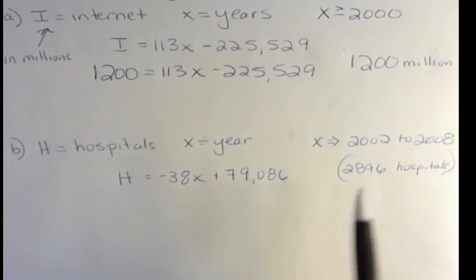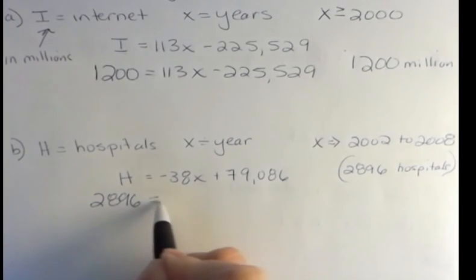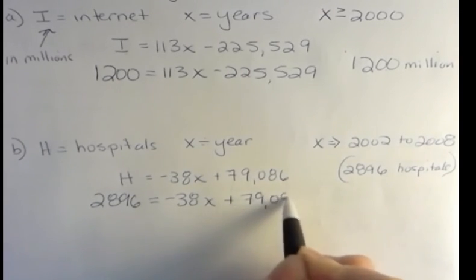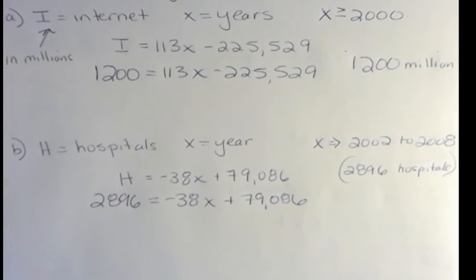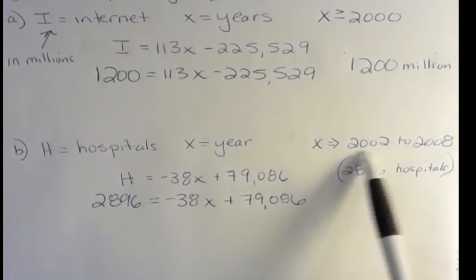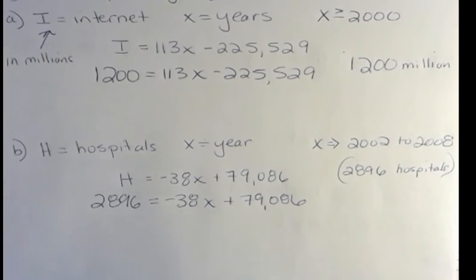And now I want to know, when will hospitals be 2,896? So again, I'm going to plug in that number. And then I'm going to solve that equation. I'm going to subtract 79,086 from both sides and divide both sides by negative 38. And I'm going to get some answer. And my answer is going to be between these two years, maybe 2003, 2004, 2005, 2006, 2007. But somewhere in between those two years is my answer. And that's what I'm looking for.